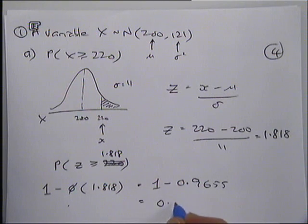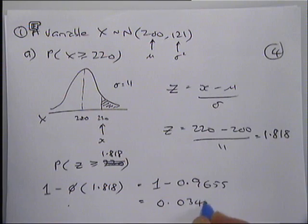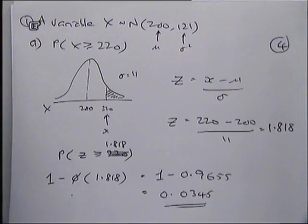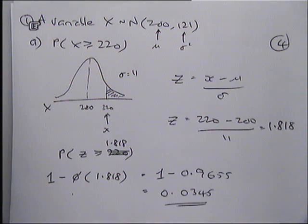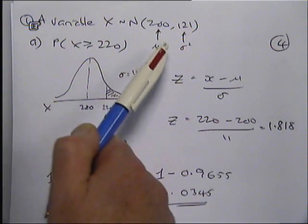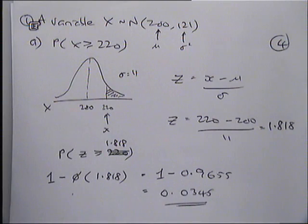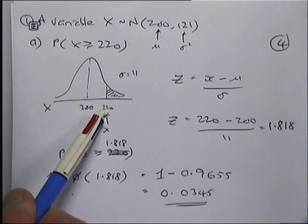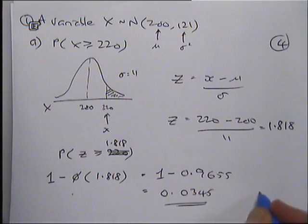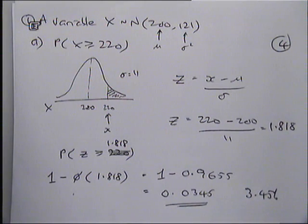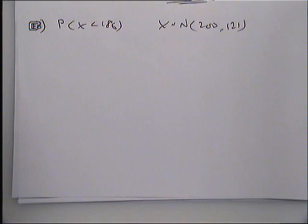If you do that you're going to get an answer of 0.0345. Sometimes you might want to give your answers as a percentage, so basically we've said if X follows normal distribution with a mean of 200, variance 121, the probability that X is bigger than 220 is 3.45 percent.